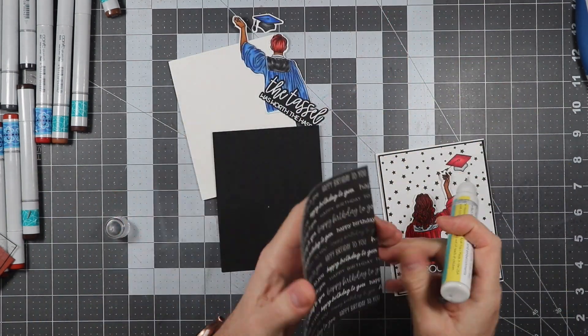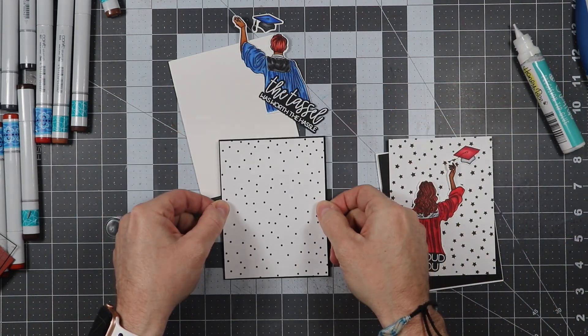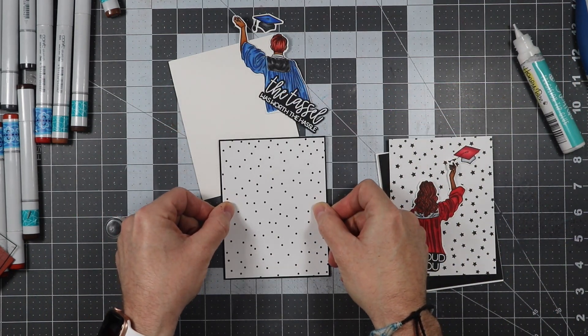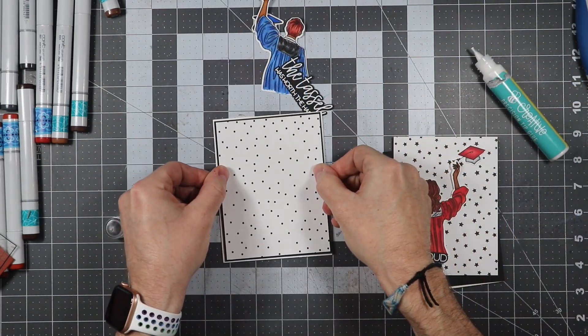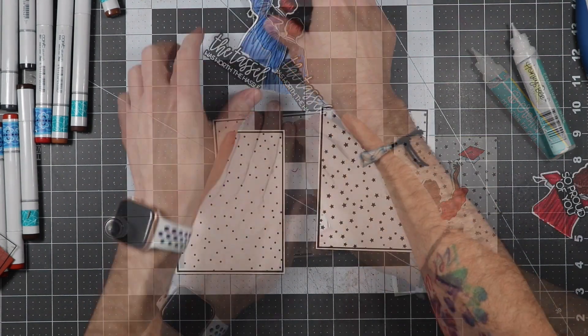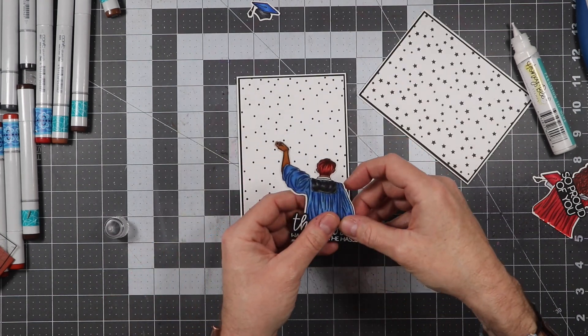So we're going to go ahead and use some Honey Bee Stamps glue here and go ahead and get the first part placed onto the panel. There we go—it's even my head didn't show up, that's crazy. And now we'll go ahead and get the panel glued down to the card base. And now we are going to put the pieces onto the card.